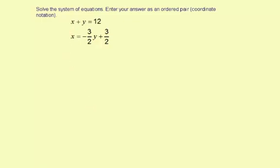In taking a look at this system, the second equation is solved for x, so I'm going to use that as a substitution and substitute all this, the negative 3 halves y plus 3 halves, into this first equation for x. So that's going to give negative 3 halves y plus 3 halves plus another y equals 12. So this negative 3 halves y plus 3 halves was for the x, and then the plus y equals 12 was the original part of the first equation.